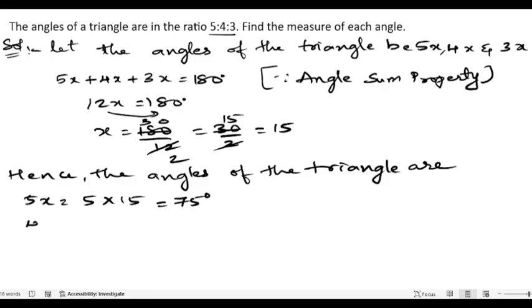4 into 15, so 4 fifteens are 60 degrees. And 3x, so 3x equals 3 into 15, so 3 fifteens are 45 degrees.